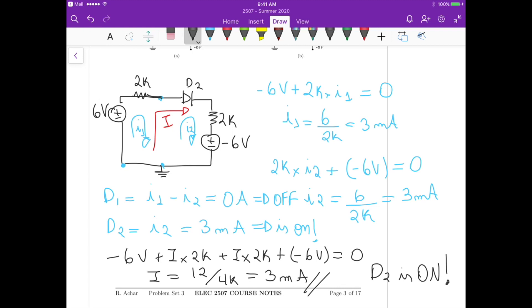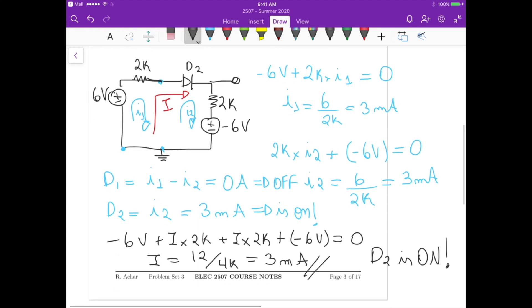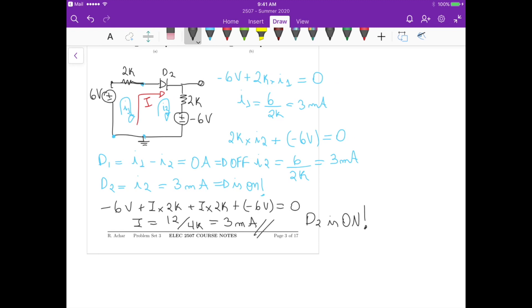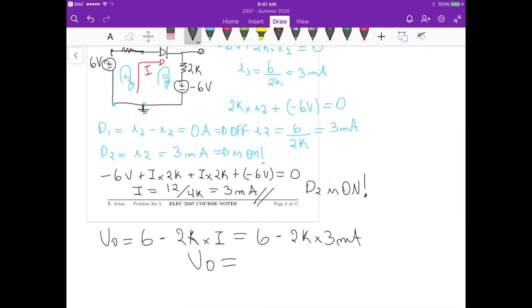But we still need to figure out what's the value of V0, and V0 is right here. So for V0, let me just zoom out a little bit. For V0, we can start at this node with 6 volts, because we know we have zero here from the ground, so V0 is equals to 6 minus 2K times the current I, and that's equals to 6 minus 2K times 3 milliampere, which is V0 equals to 0 volts, and that makes sense.